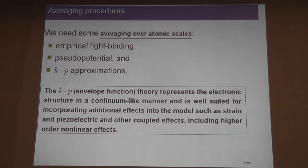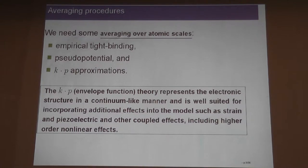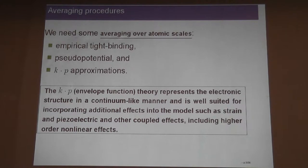Many things that we do are related to coupled effects. If you're talking about misfit piezoelectric effects, or about biaxial strain accounting in the properties of quantum dots, somehow you have to average over atomistic scales. You could do that with many different methodologies — classical empirical tight-binding, pseudopotential, and k·p potential. What you will see here is averaging using k·p theory, because it's very easy to incorporate coupled effects such as piezoelectric effects, thermal strain, or magneto-electromechanical effects.